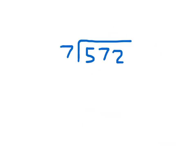So again, this is 572 divided by 7. 7 cannot go into 5. 7 can go into 57. 7 goes into 57 8 whole times, because 8 times 7 is 56. 57 minus 56 is 1.